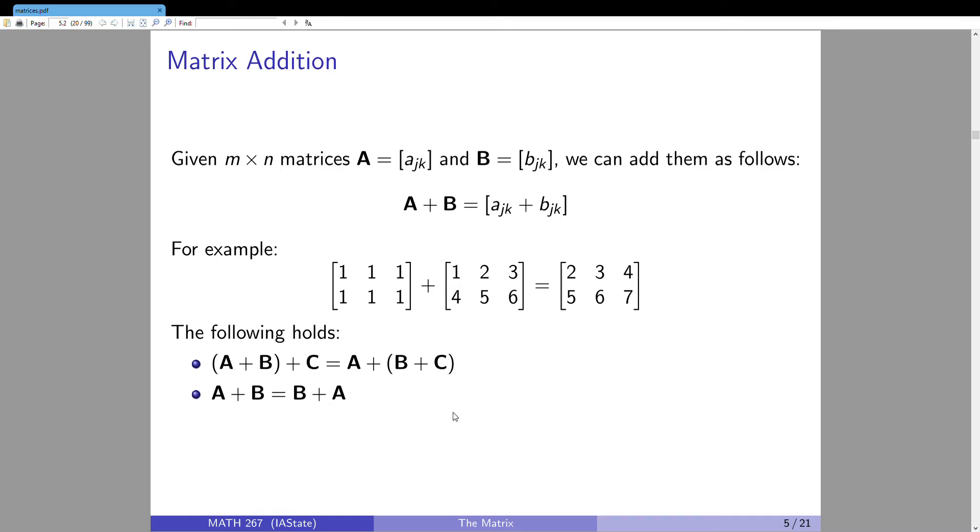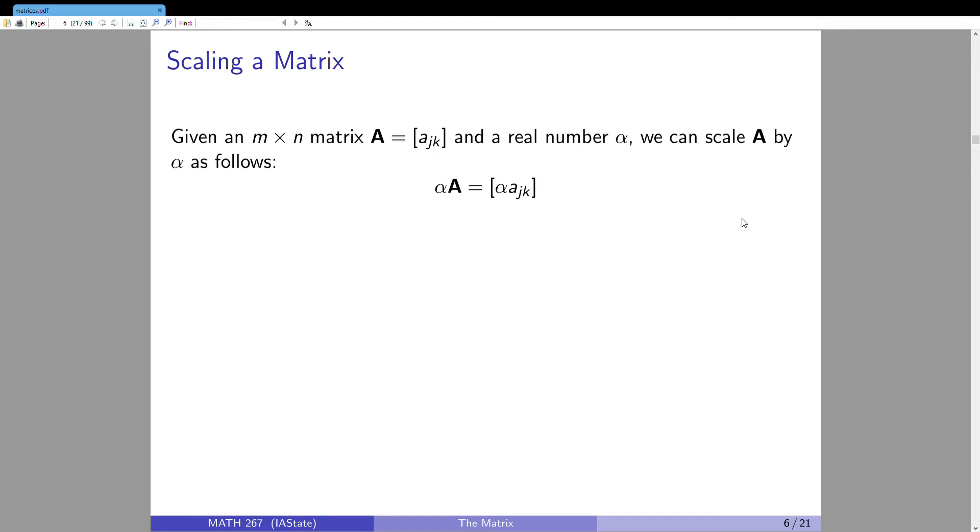Well, you just add them entry-wise. That's formally what this is saying to do. So, for example, take that 2 by 3 plus that 2 by 3 right there. Boom. 1 plus 1 is 2. 1 plus 2 is 3. 1 plus 3 is 4. You see, you got it. Nothing crazy. If I add, if I want to add two matrices, you just add up their entries. And this has some nice properties. So, because we already know adding up numbers behaves well, that means that matrix addition will behave well. So, specifically, it has the associativity property and the commutativity property of addition.